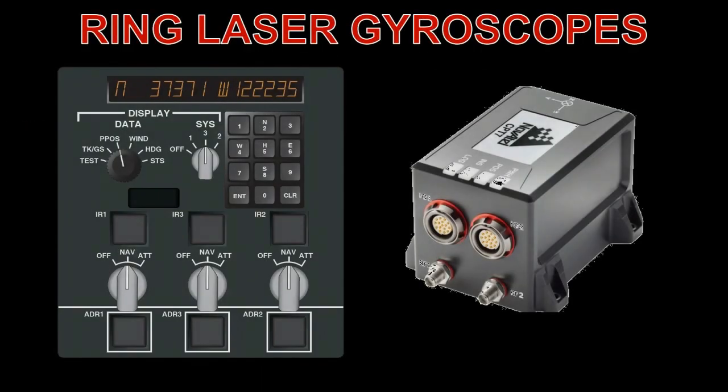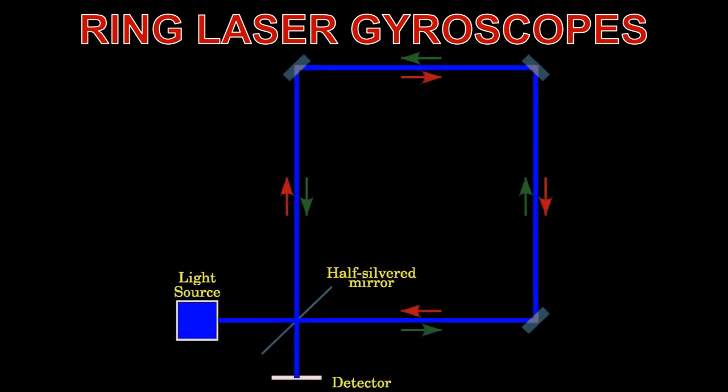In modern aircraft, the inertial reference and navigation systems contain gyroscopes that are called ring laser gyroscopes. This operates on an effect called the Sagnac effect. Two beams of laser light are fired from a light source. The half-silvered mirror allows one beam to go one direction, and the other beam to go at right angles to the first.